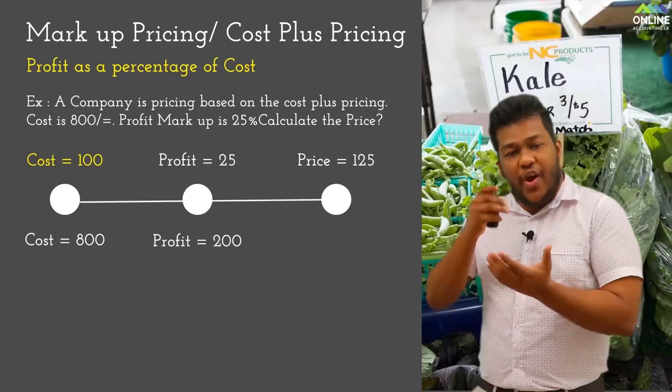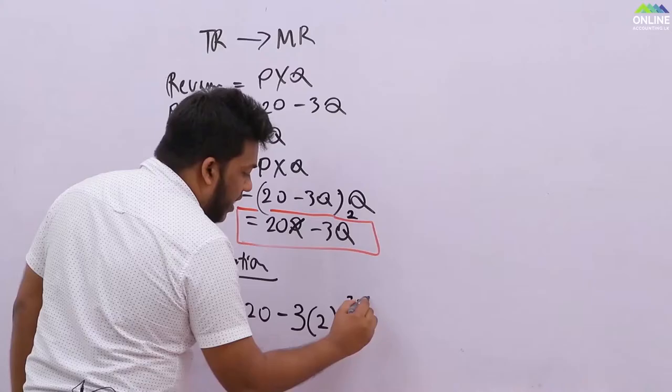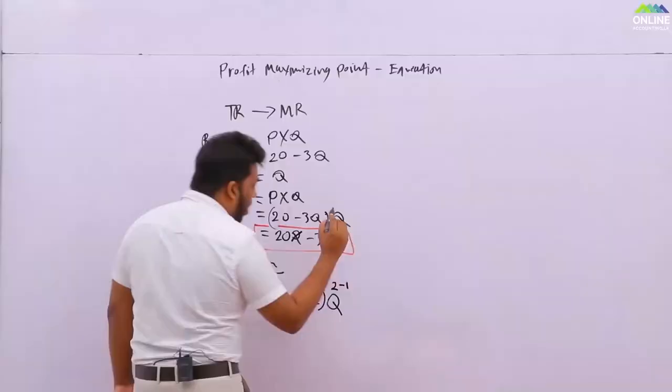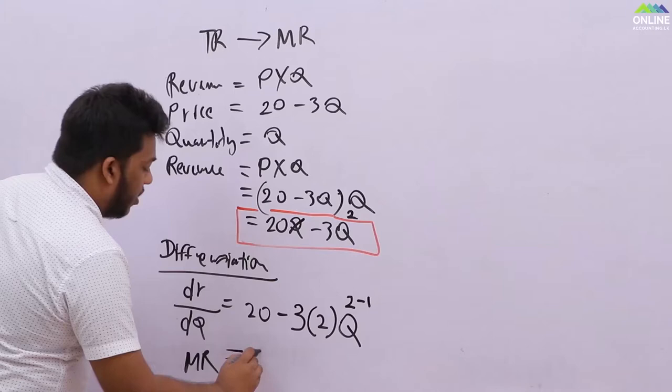That gives 200, so the final price would be 1000. And the power here minus one — if it is three minus one, or four minus one — then you get the marginal revenue formula: 20 minus 6q.